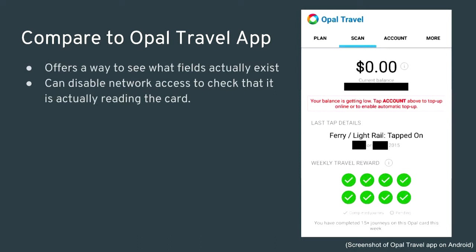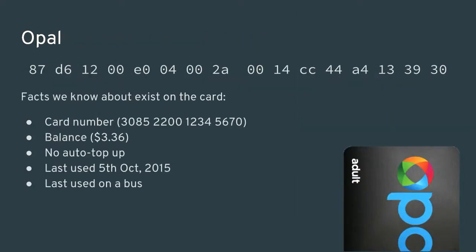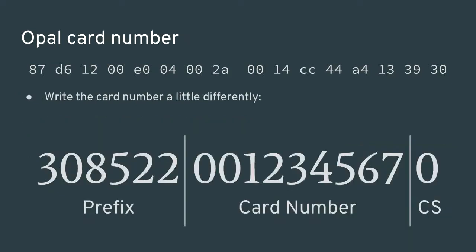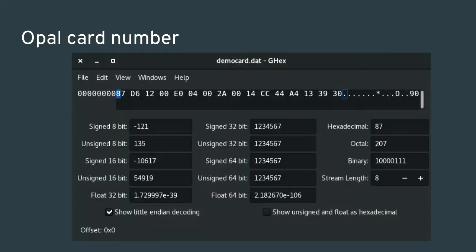One source of facts is the Opal Travel app, which can read data from the card itself. I can restrict network access to verify that fact and look for expected constants. The Opal website shows more information like the ledger, but unfortunately that data isn't accessible directly. Now knowing what we could read, we can go looking for this data on the card. All Opal cards start with 308522 — that last digit is probably a checksum. The Opal card number is a 32-bit unsigned little-endian integer.